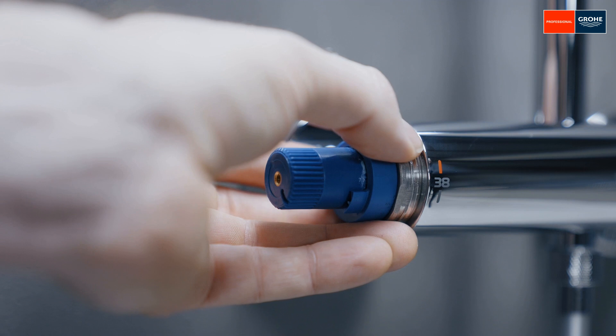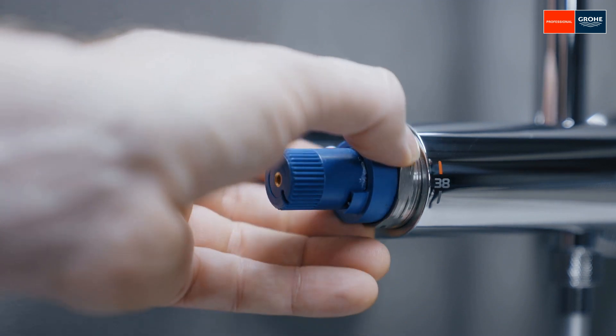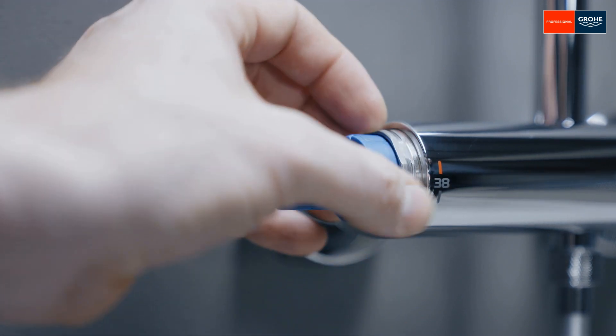Screw tight, turn on the water and check that everything is leak-proof. It is enough to tighten by hand here.